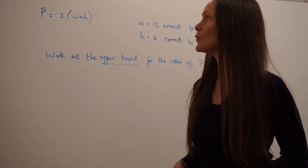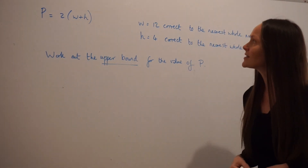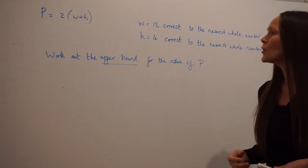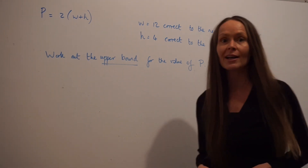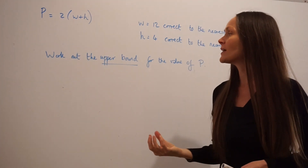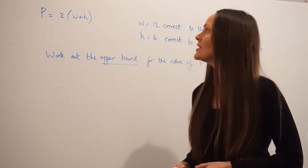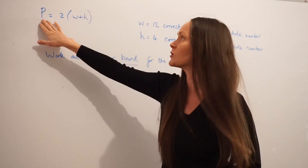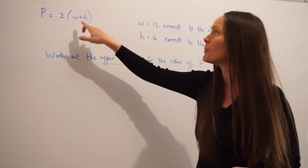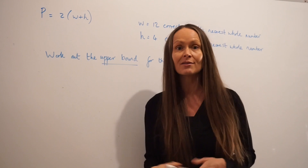In the next question we've been given a formula: p is equal to 2 multiplied by w plus h. They also tell us that w is equal to 12 and h is equal to 4, and they've both been rounded correct to the nearest whole number. We need to work out the upper bound for the value of p. If we're working out the upper bound of p, it means we're working out the largest possible value that p can be. So we need the largest possible value of w and also h — we need to work out the upper bound of both w and h, then substitute them into the formula.